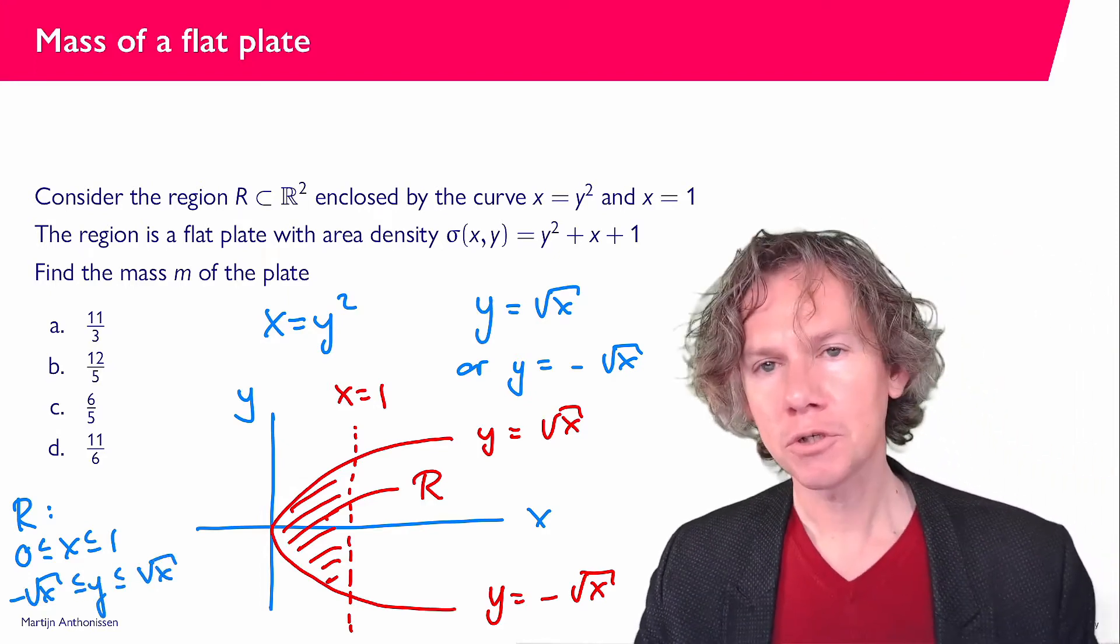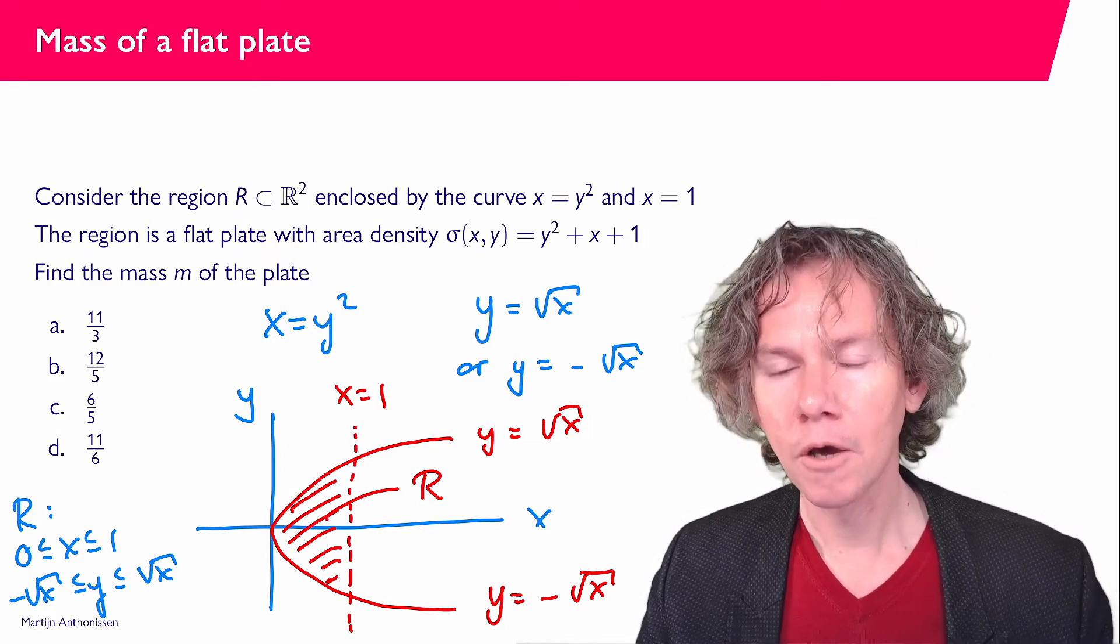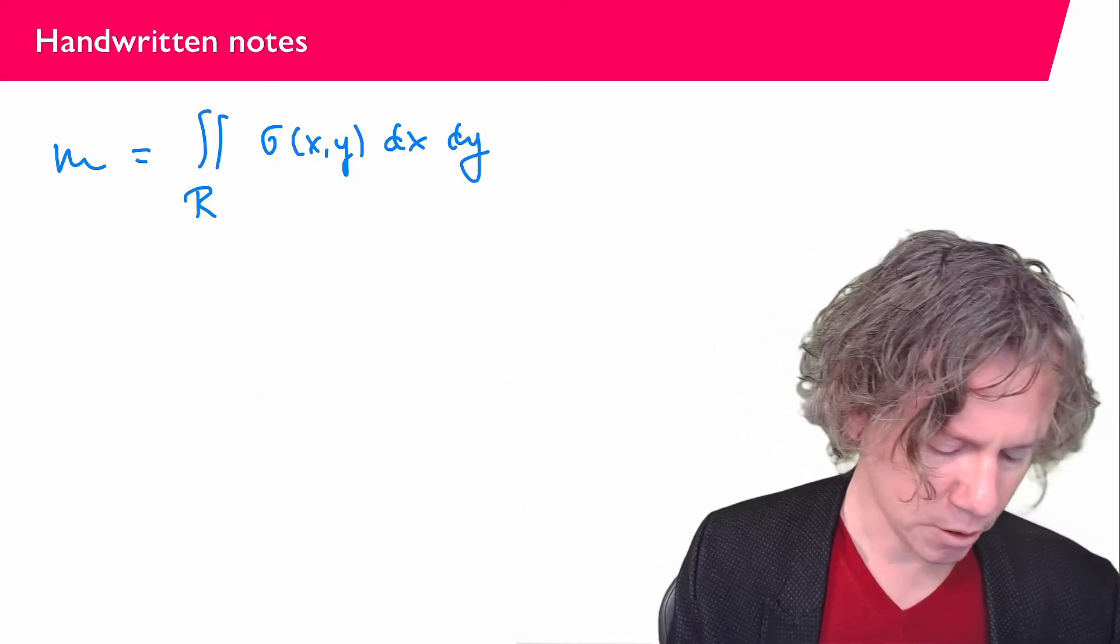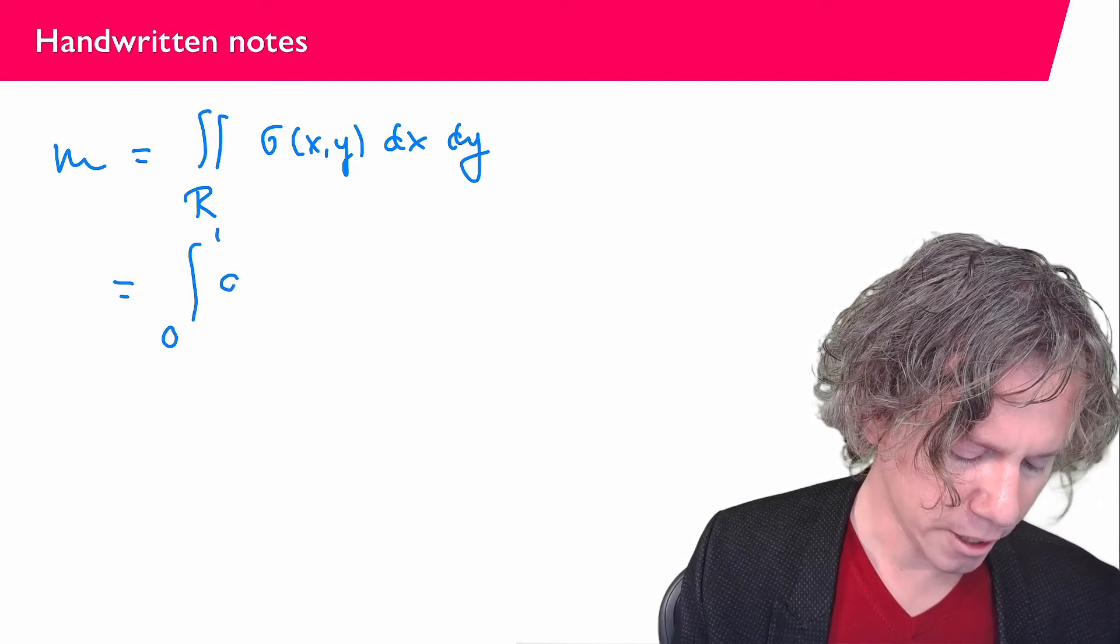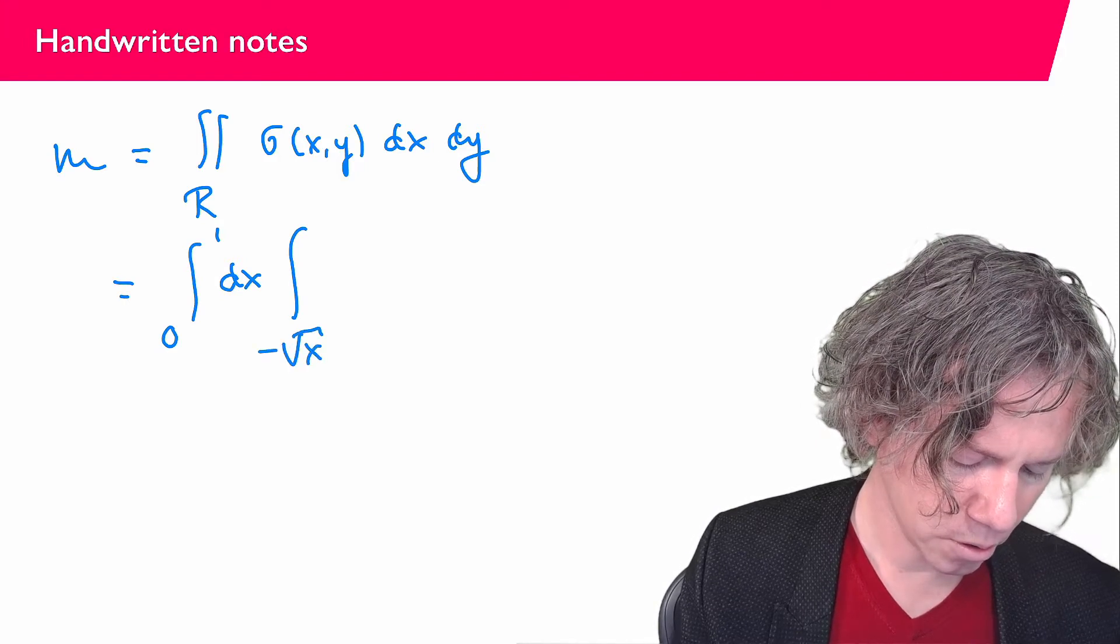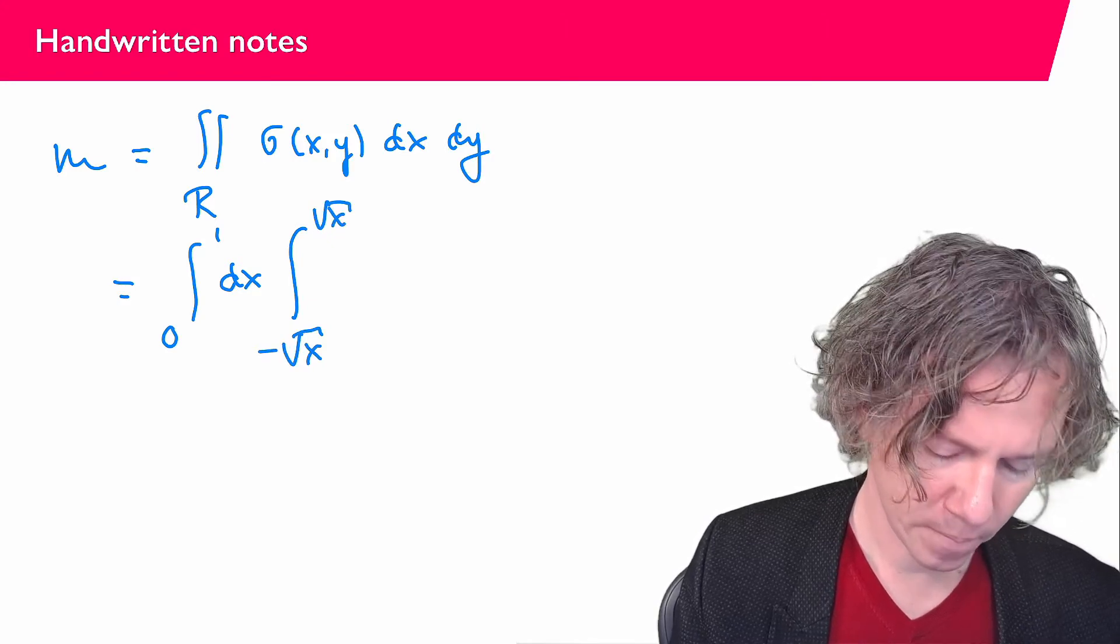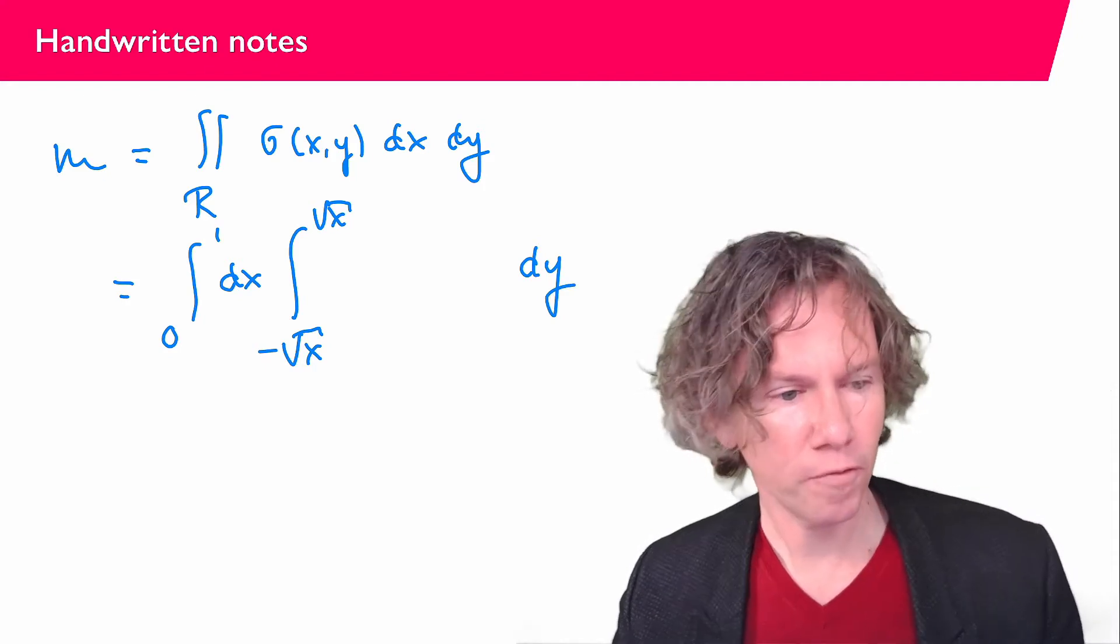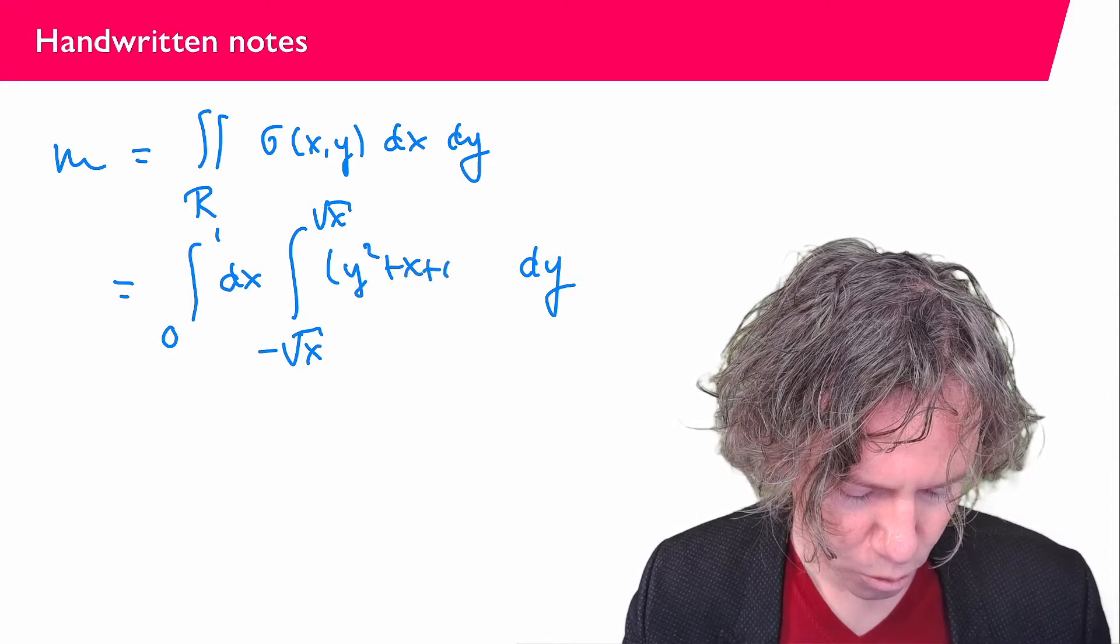And this characterization, this description, this parameterization of the region readily gives us the integral. So I can now write my integral as the integral from 0 to 1 dx and from minus square root of x to square root of x dy, and the function that I need to integrate is the sigma function. That is y squared plus x plus 1.